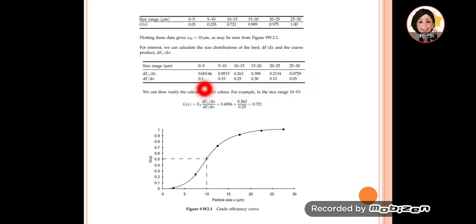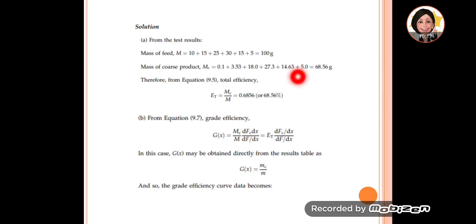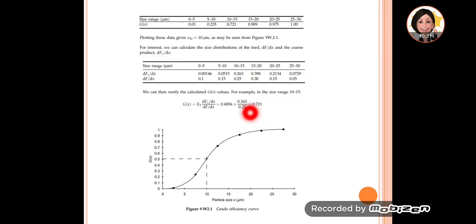This is how we get the frequency of each size range. Then we use the efficiency calculated (6.856). For example, if calculating for 10 to 15%, we multiply 0.6856 times the coarse efficiency over the total efficiency. This gives the grade efficiency for this size range. This is how we use this equation.